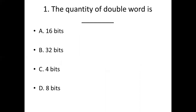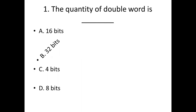First bit. The quantity of a double word is dash. Option A: 16 bits. Option B: 32 bits. Option C: 4 bits. Option D: 8 bits. Answer: Option B, 32 bits.